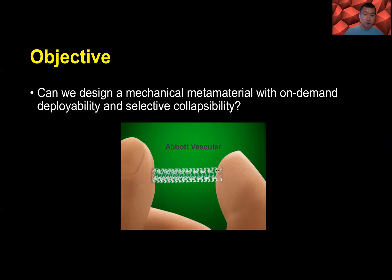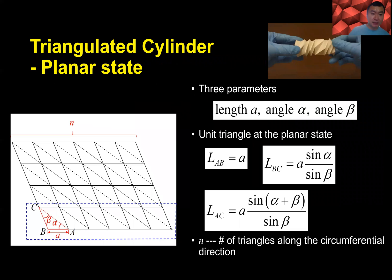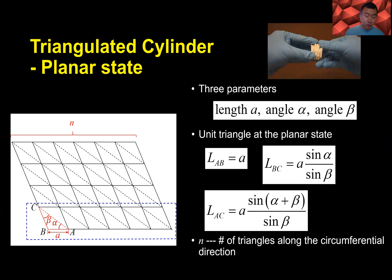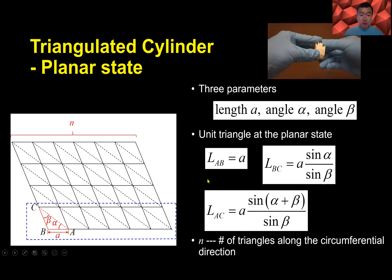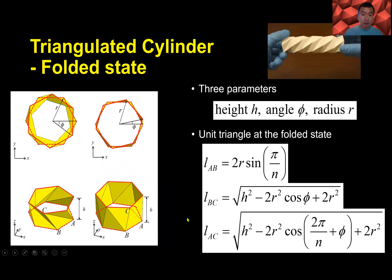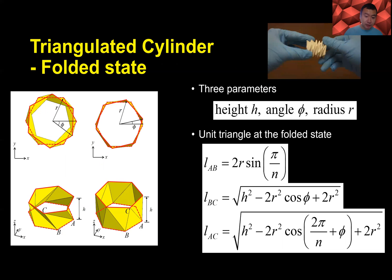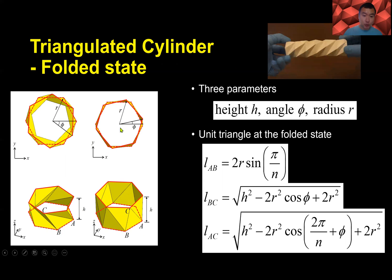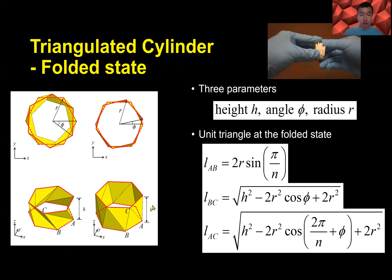Our starting point is the triangulating cylinder pattern. In its planar state, it consists of many triangles. The unit cell is one triangle with three parameters: length A, angle alpha, and angle beta. With these three parameters we can define the planar state using capital L as the crease length. For the folded state, we also have three parameters: height H, angle phi, and radius R, with crease lengths LAB, LBC, and LAC.